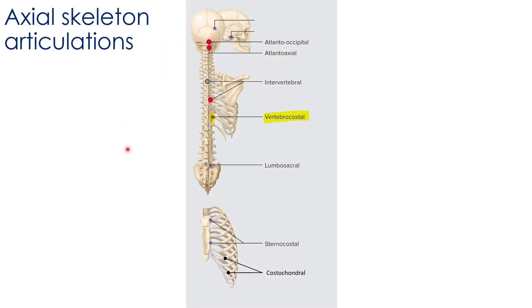Summarizing the vertebral articulations: the atlantooccipital joint is a synovial condylar, the atlantoaxial joint is a synovial pivot, and the intervertebral joints are either synovial planar joints at the articular processes or cartilaginous symphyses at the vertebral bodies.